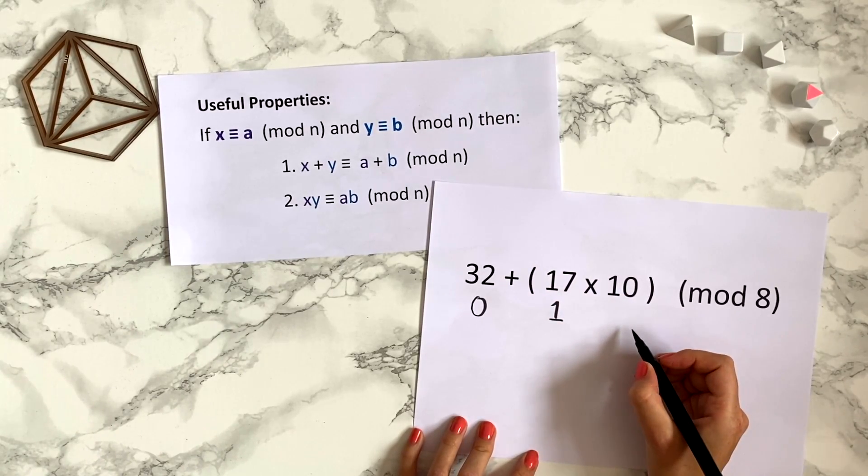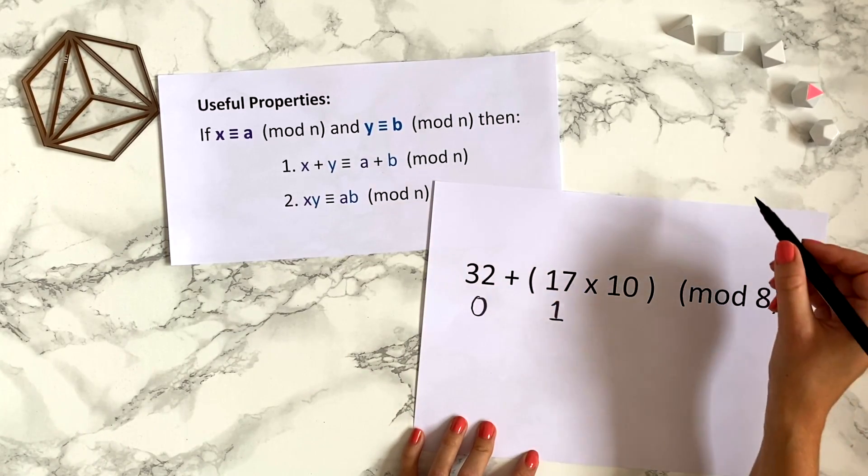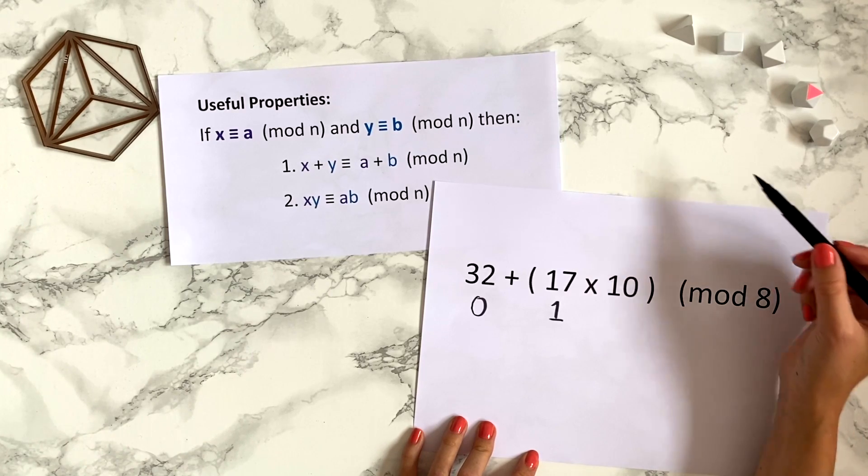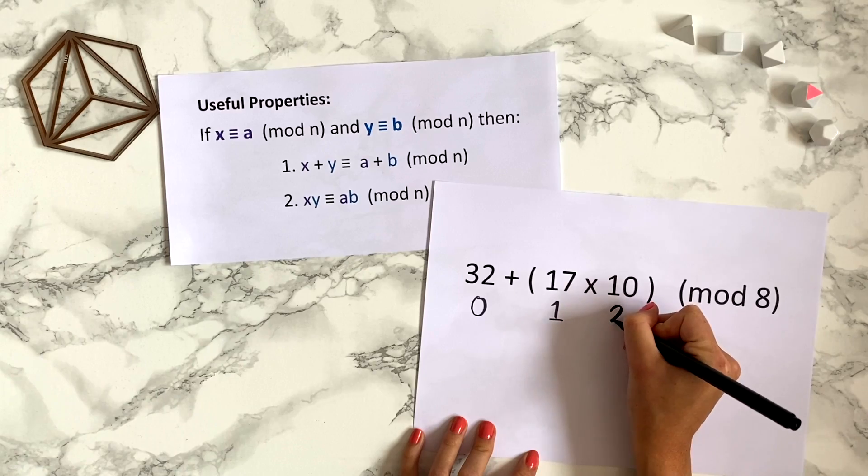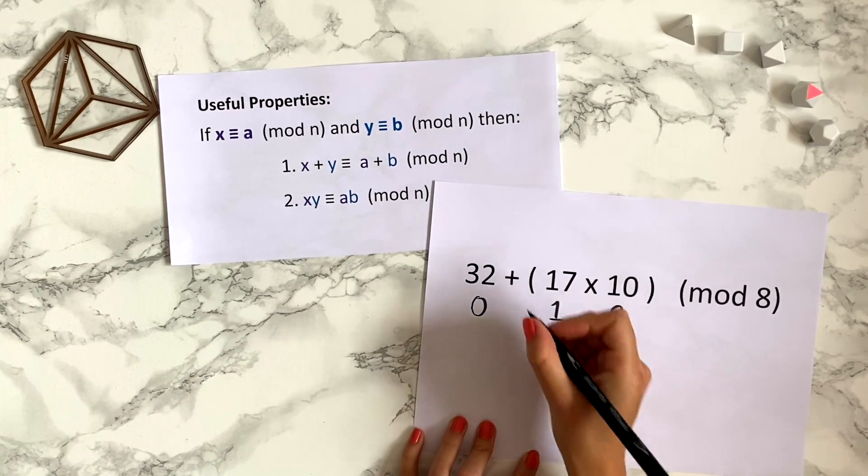10 mod 8, well 8 o'clock is at the top of the 8 hour clock, and so to get to 10 o'clock you go around 2. So 10 is congruent to 2 mod 8.